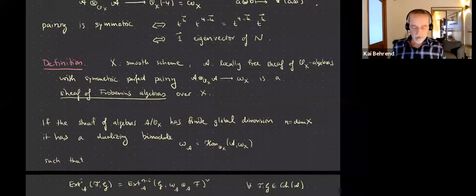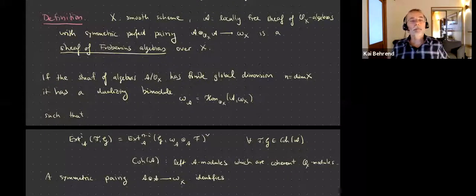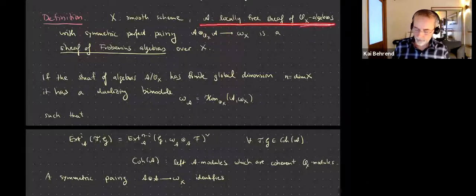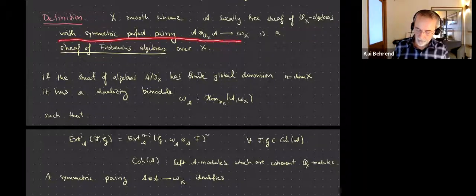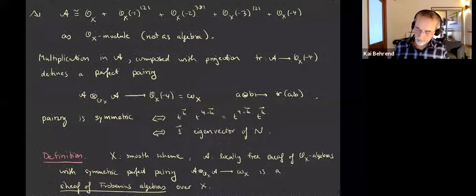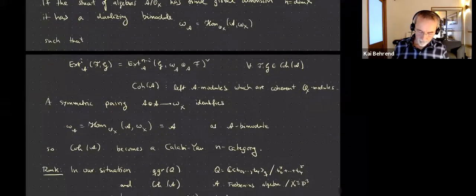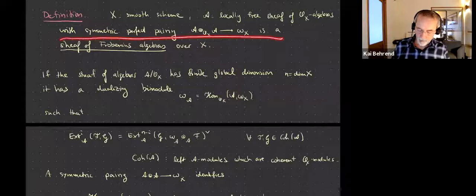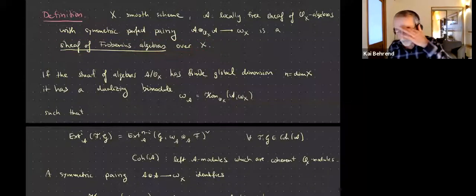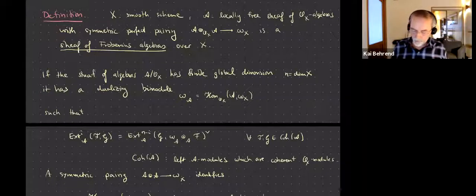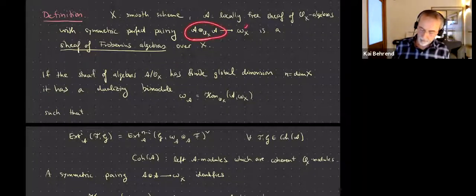So we've got an example of the following general situation: let X be a smooth scheme — in our example that's P^3 — and A a locally free sheaf of O_X-algebras, possibly noncommutative, with a symmetric perfect pairing A ⊗ A → Ω_X. Since O_X(-4) is the dualizing sheaf of P^3, I call this a sheaf of Frobenius algebras over X.